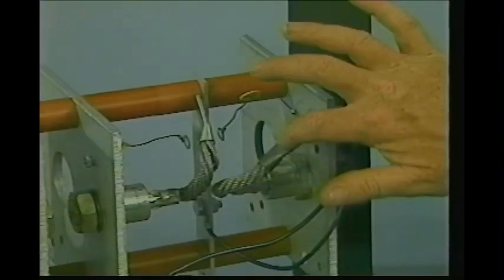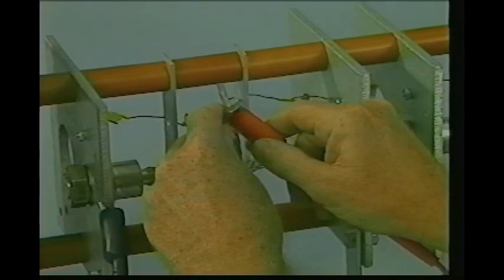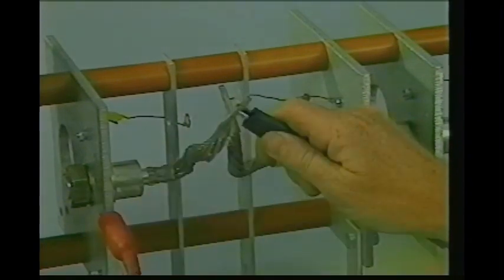The test procedure began with the isolation of the diodes from the rectifier by removing the pigtails. The meter leads were then connected to the stud and pigtails. Readings were then noted. The leads were reversed, and once again, readings were noted. After testing all of the diodes in the rectifier assembly, the results were evaluated.